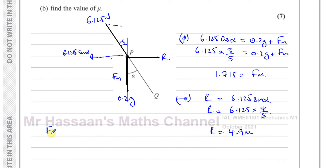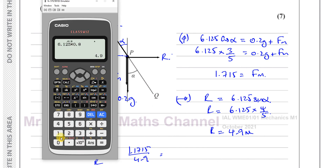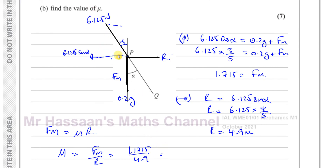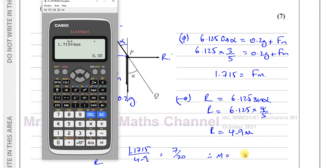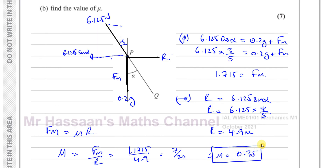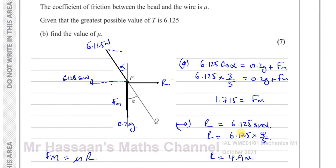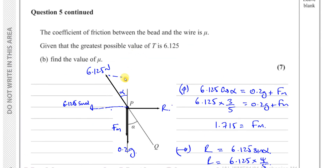Since F_max = μR, we get μ = F_max / R = 1.715 / 4.9 = 7/20 = 0.35. So the coefficient of friction between the bead and the wire is μ = 0.35.